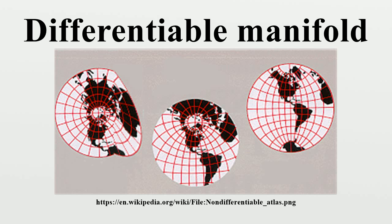In other words, where the domains of charts overlap, the coordinates defined by each chart are required to be differentiable with respect to the coordinates defined by every chart in the atlas. The maps that relate the coordinates defined by the various charts to one another are called transition maps.